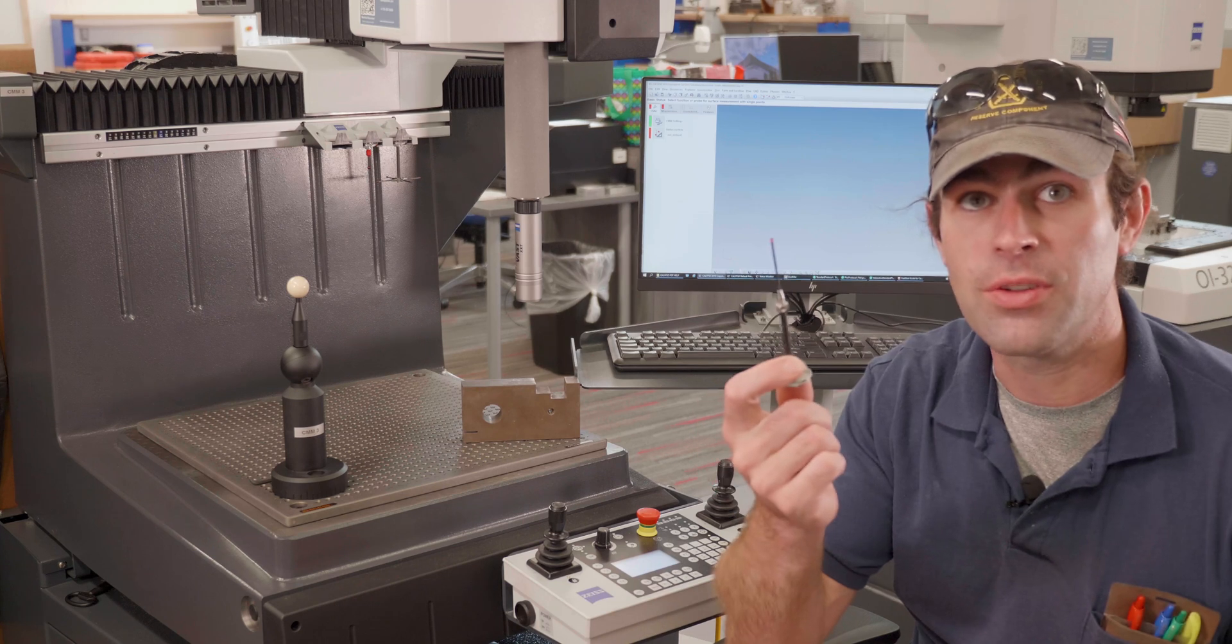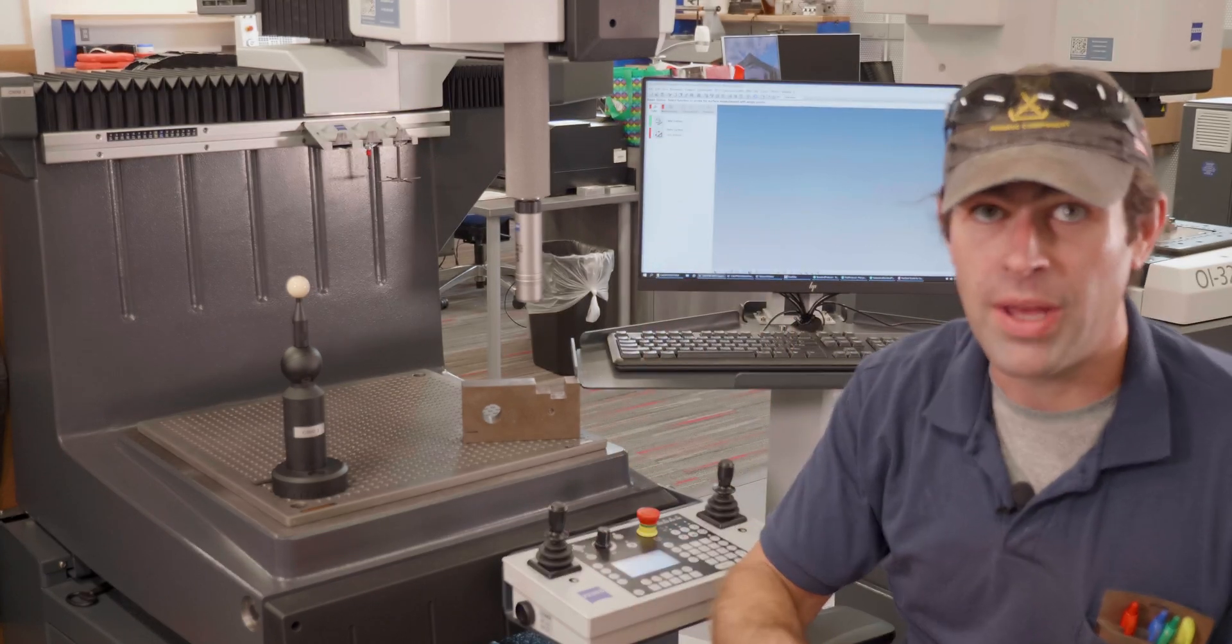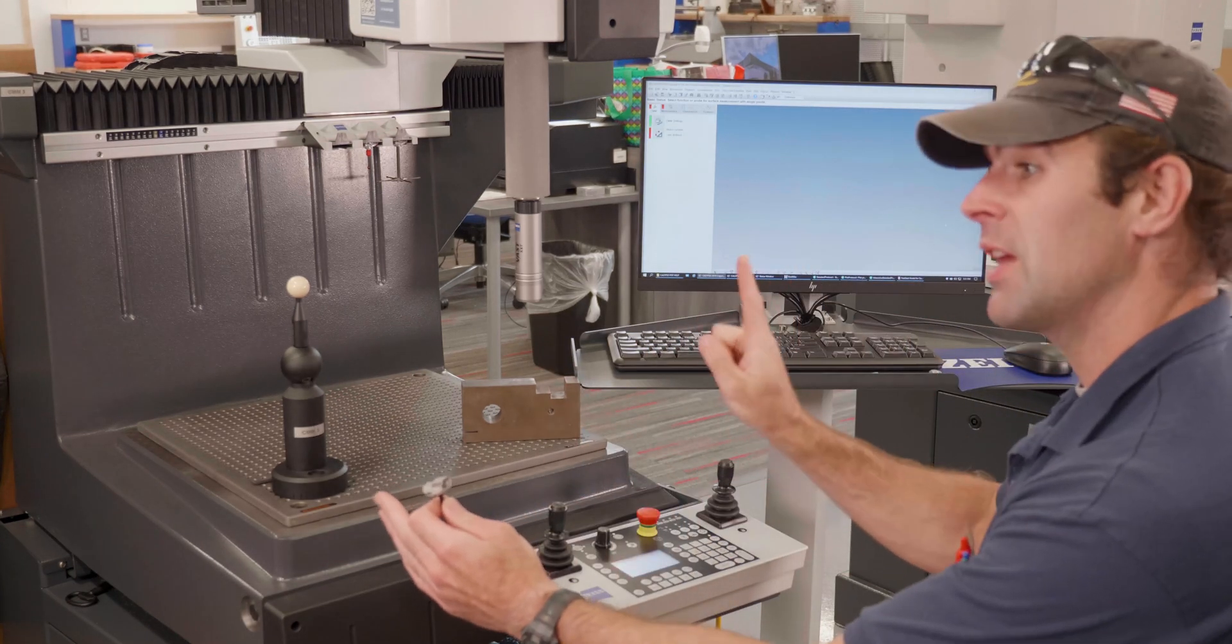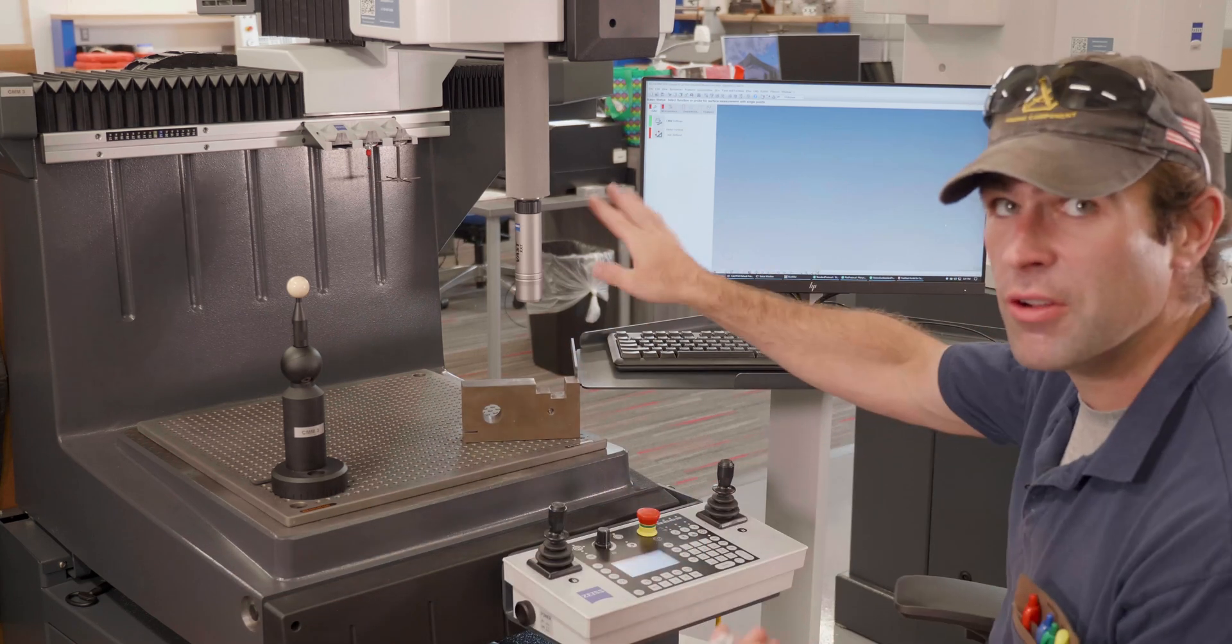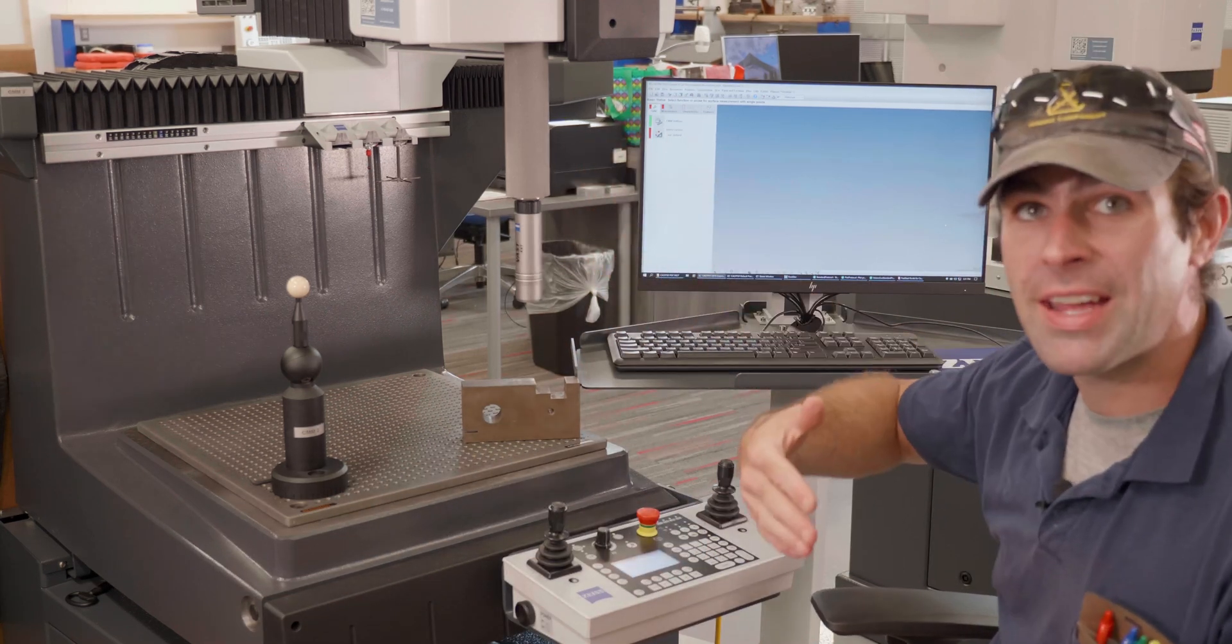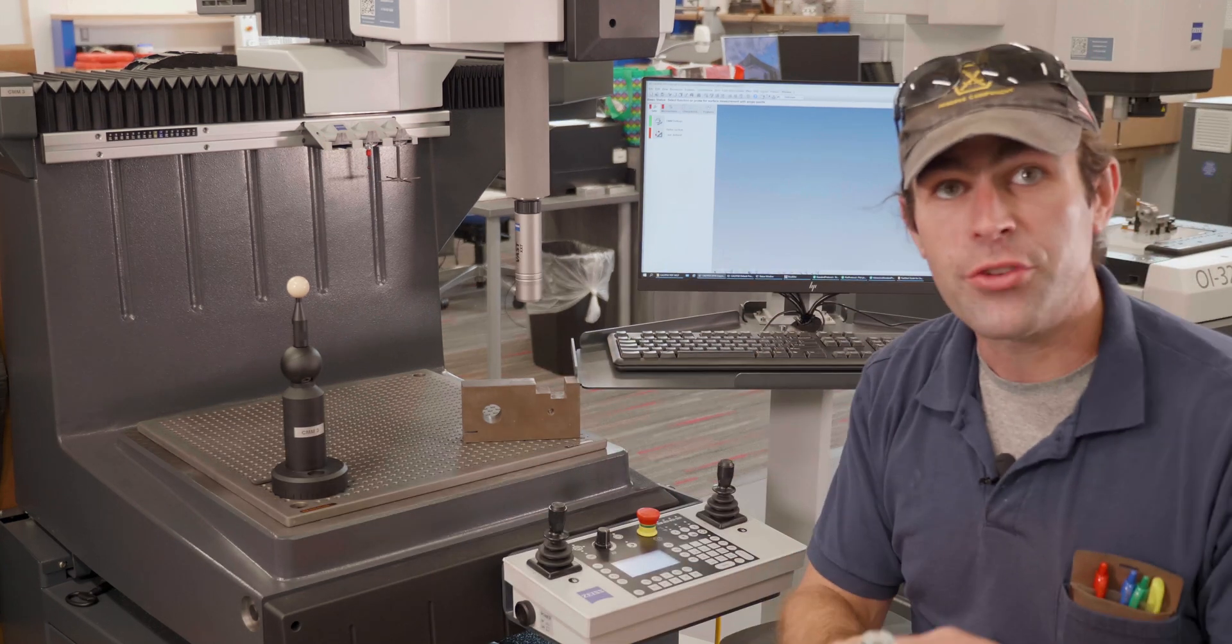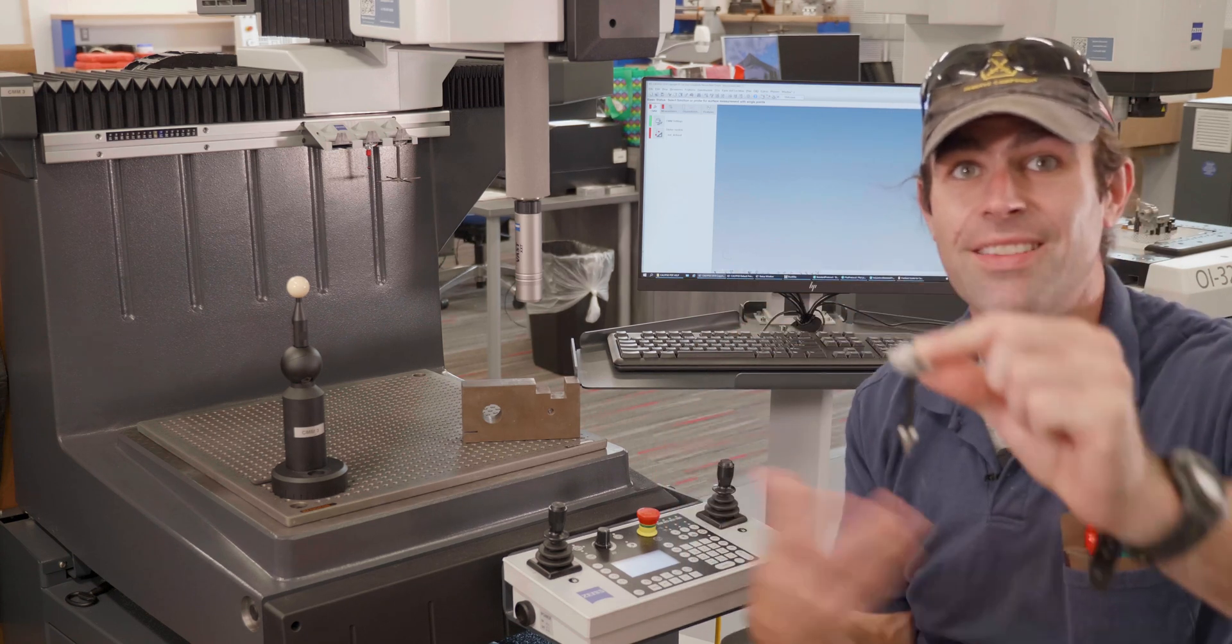What we're going to do today is just a basic z-down stylus. We call them by the absolute coordinates. Basically, if you're looking at the machine, anything to the right is x plus, to the left x minus, in front of you y plus, behind you y minus, and up and down is z. So this stylus that's pointed down we'll call that a z-down.